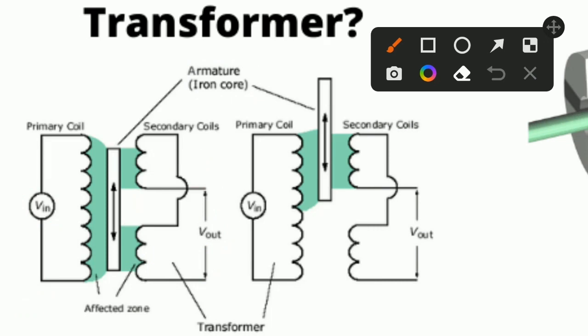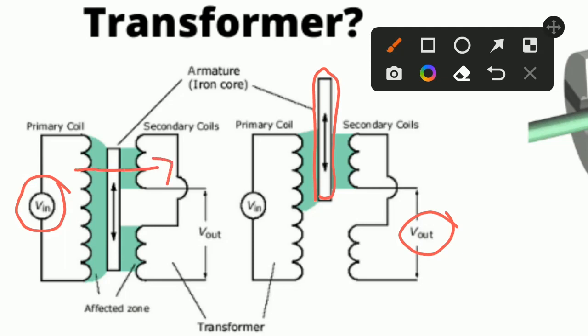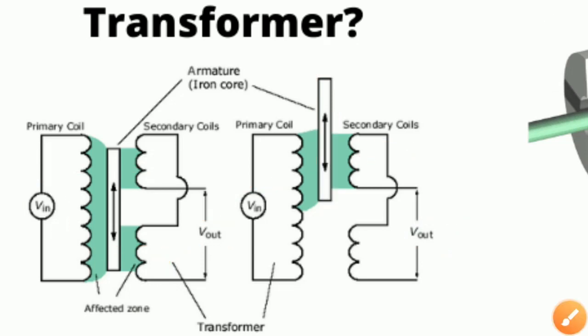In the second diagram, the iron core is moved from the center position to the upward position, and at that time some output voltage is generated. The green part represents the magnetic fluxes linking from one coil to another coil. When input is given to the primary coil, a magnetic field develops around it and these fluxes link to the secondary coil, generating the output voltage. When the iron core moves upward, the fluxes move towards the upper coil, and some voltage is generated.